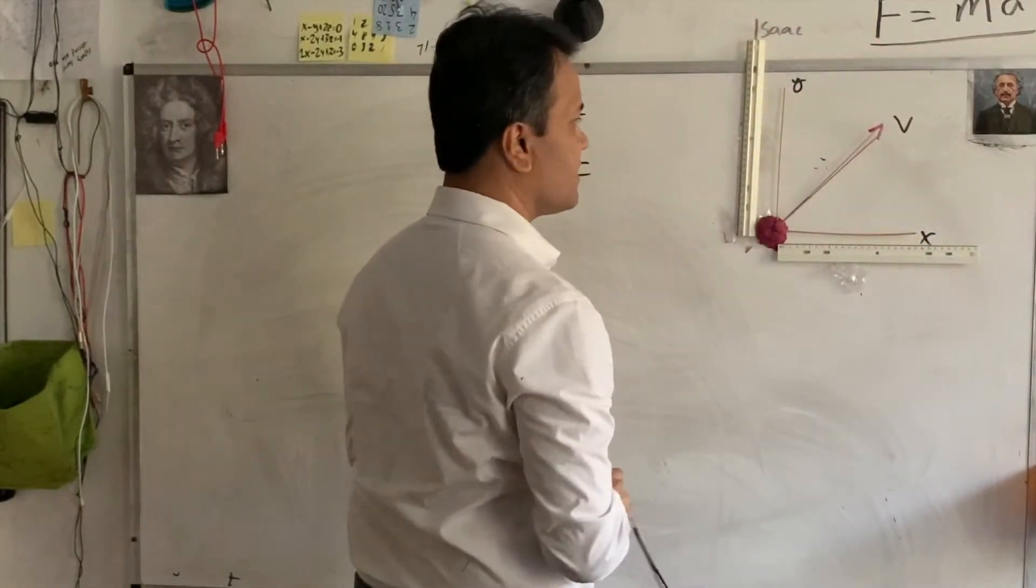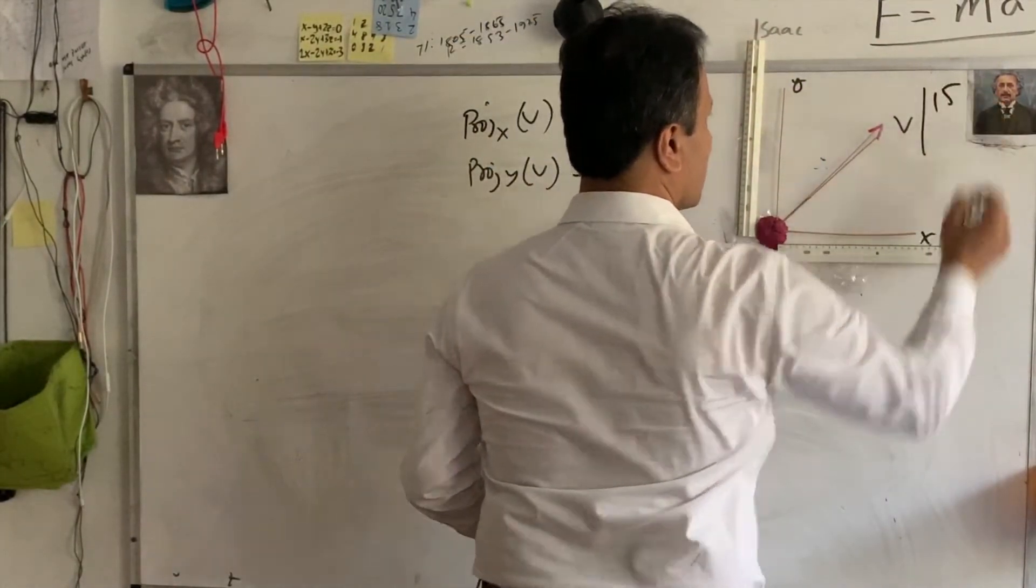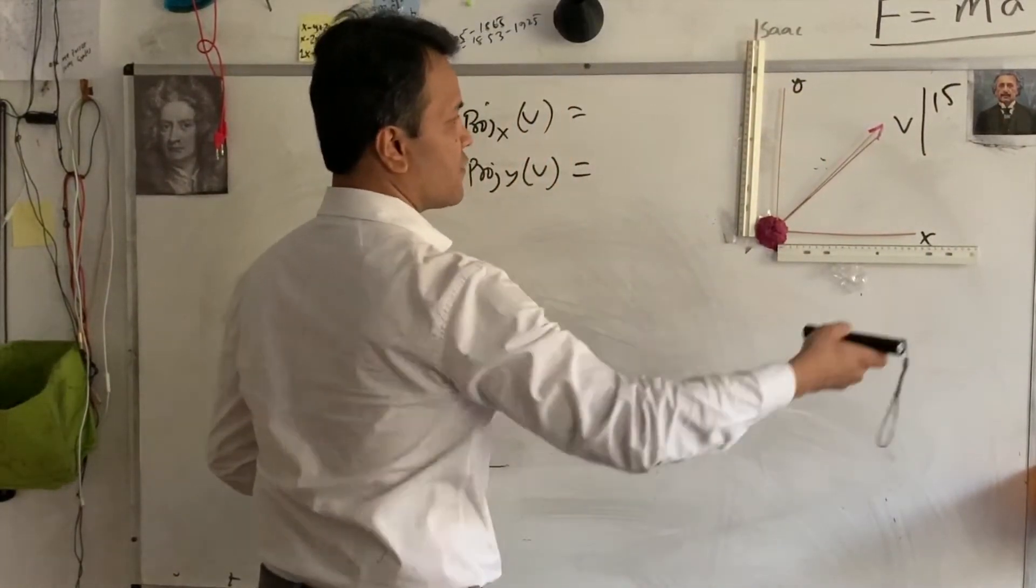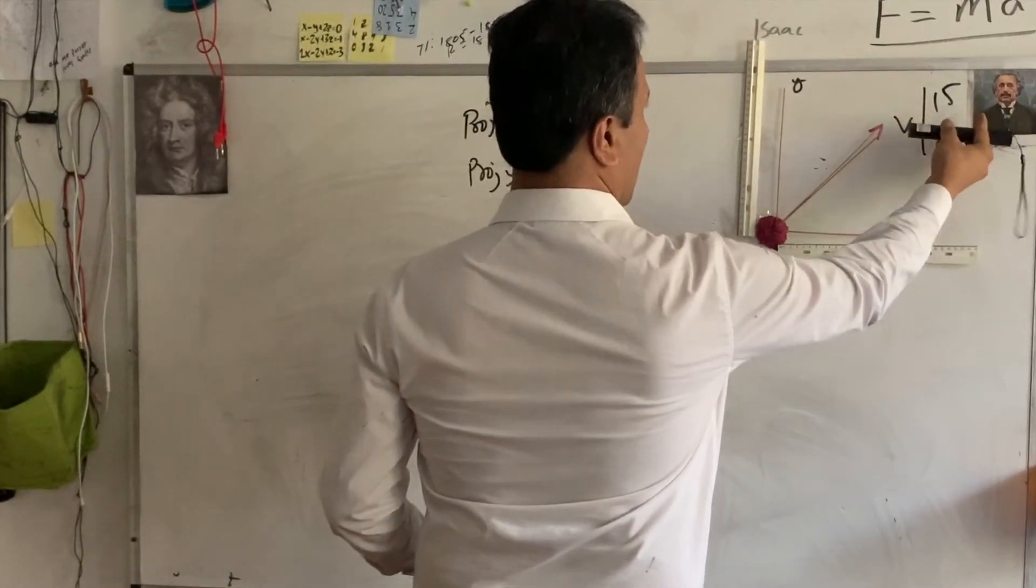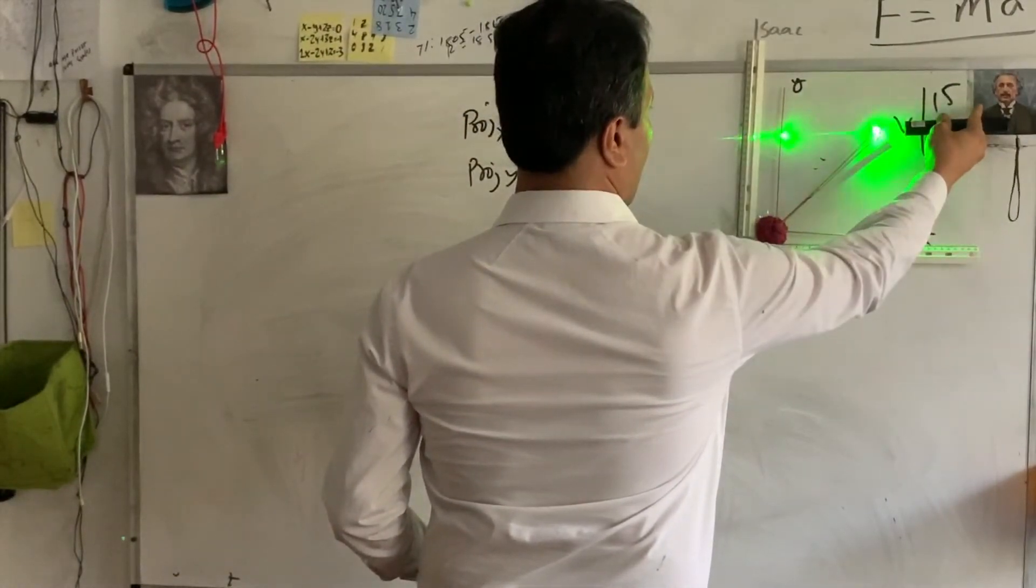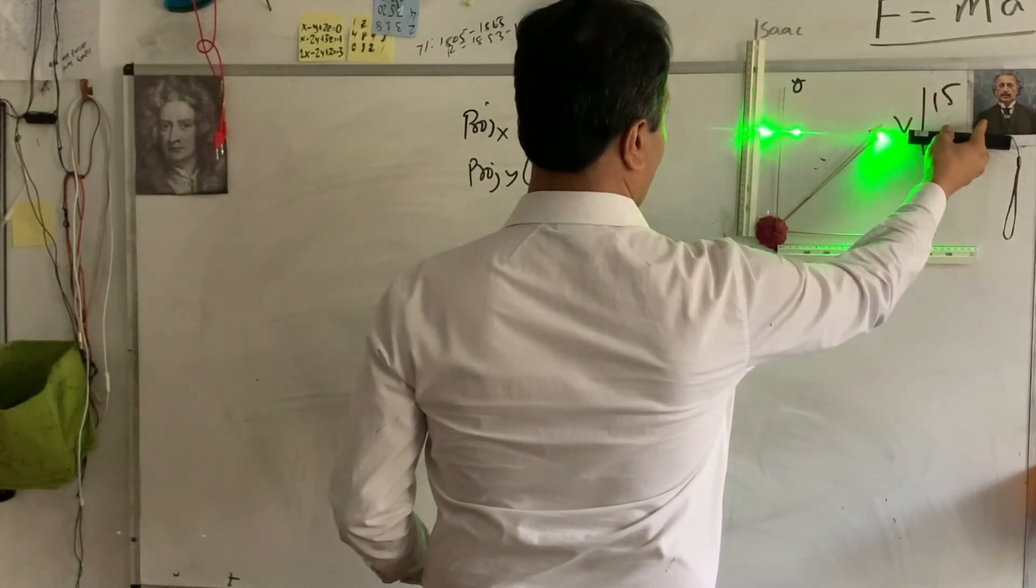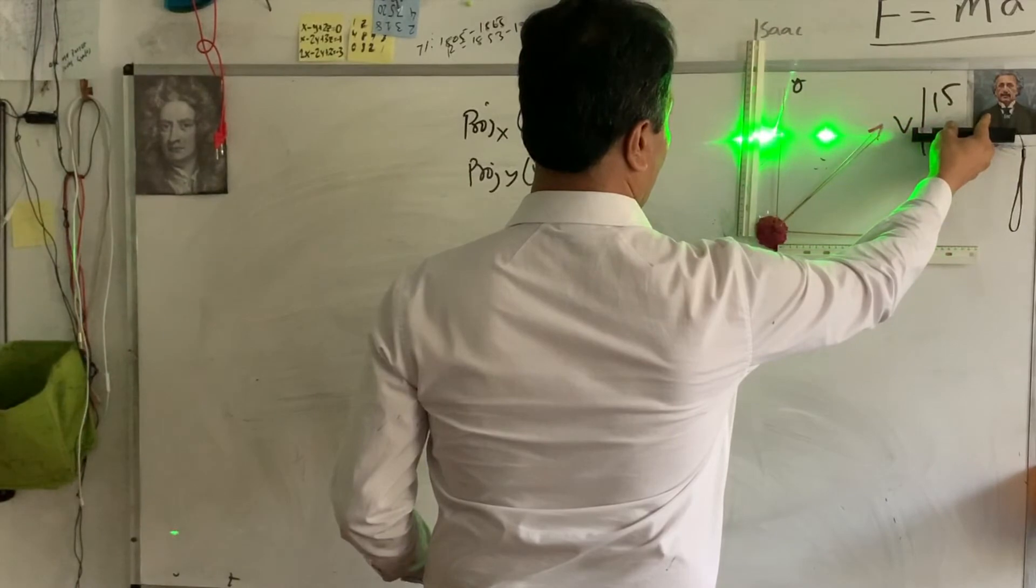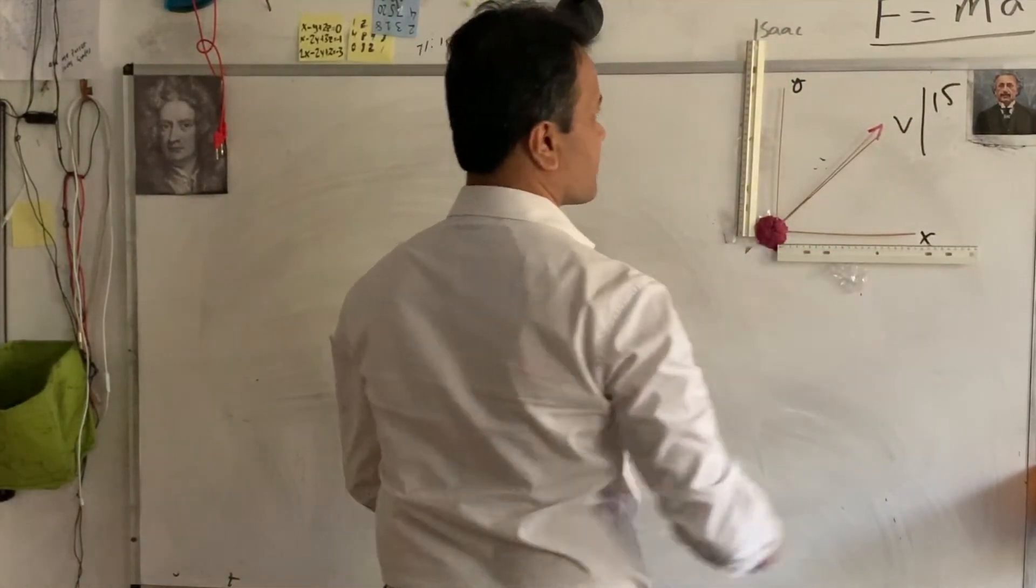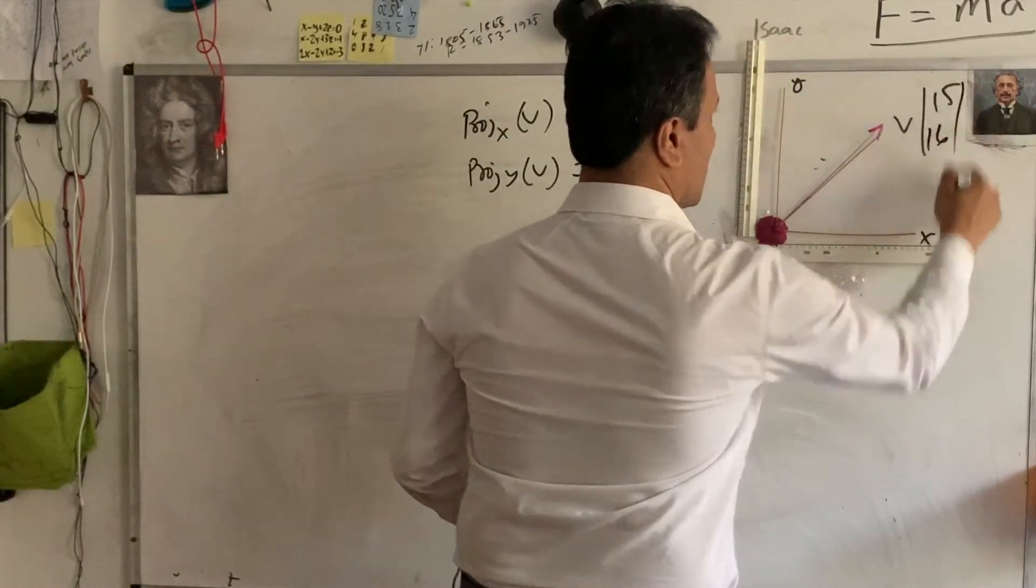So, this is 15. So, I got 15. And projection of 0. So, this is 16.